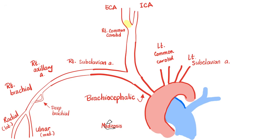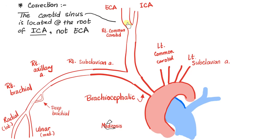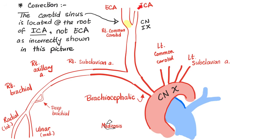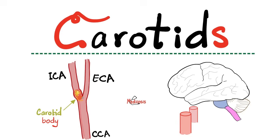The internal carotids are for the brain; the external carotids are for the face, basically. At the bifurcation of the common carotid into external and internal, we see the carotid sinus, which contains baroreceptors. The carotid body contains chemoreceptors. Both the baroreceptors and chemoreceptors in the carotid sinus are supplied by the glossopharyngeal nerve, the ninth cranial nerve. However, the chemoreceptors and baroreceptors in the aortic arch are supplied by the vagus nerve. A quick correction: the carotid sinus and carotid body should be at the root of the internal carotid, not the external carotid.